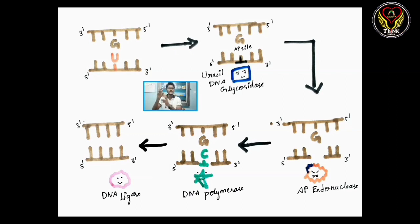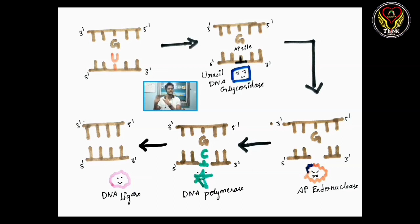The second step is the AP site — the apurinic/apyrimidinic site. The AP endonuclease enzyme then cuts the backbone. We will finish the backbone cut, and then DNA polymerase synthesizes new DNA. DNA ligase then seals the strand — that is what we call DNA ligase. This is the mechanism of base excision repair.